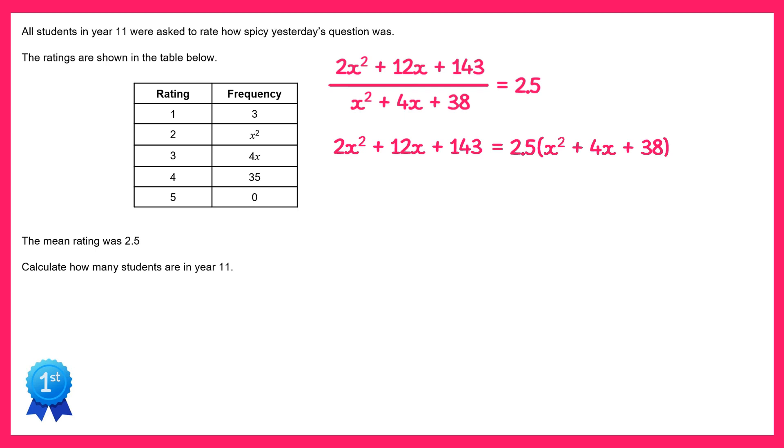Now I need to solve this. I'm going to double both sides, so if I multiply the left side by 2 I get 4x squared plus 24x plus 286, and if I double the right hand side I can just double the 2.5 to get 5 and then multiply by that bracket.